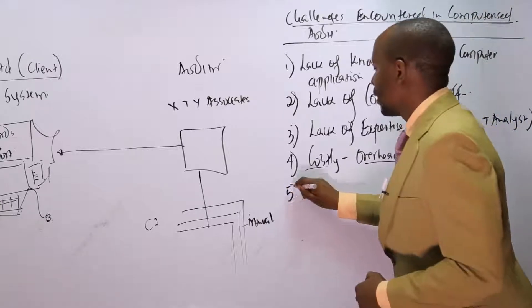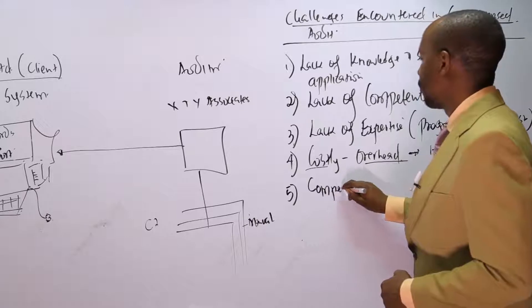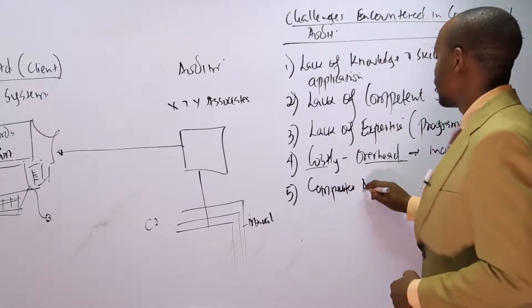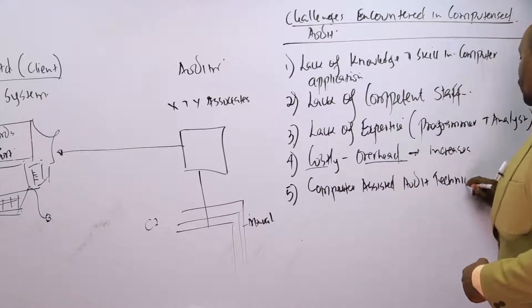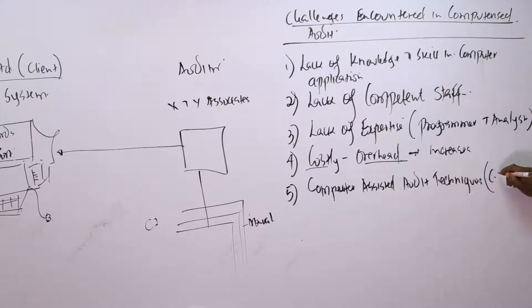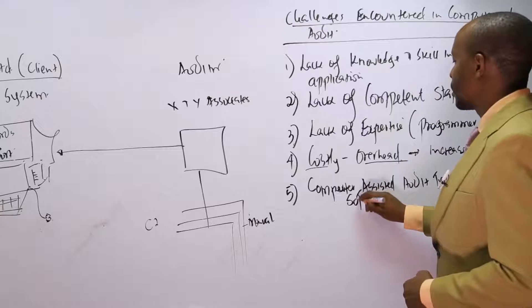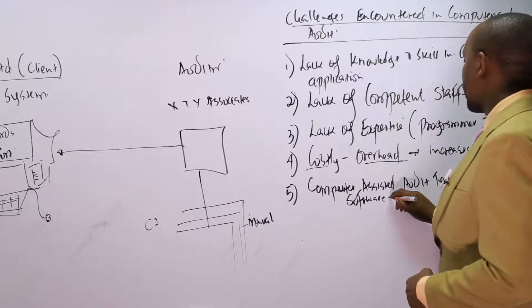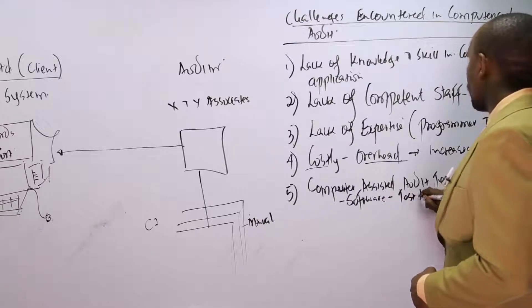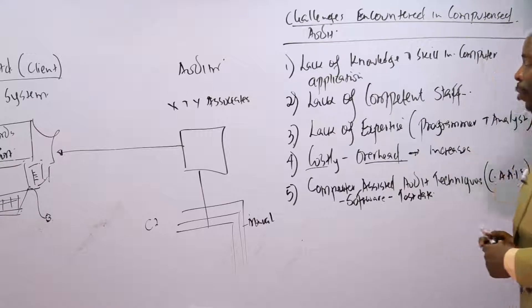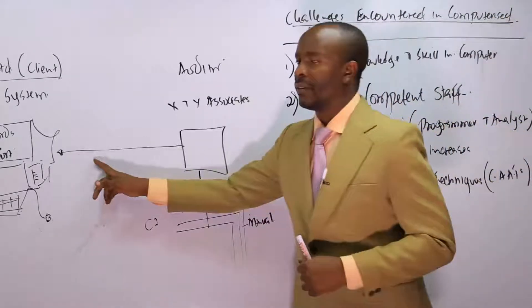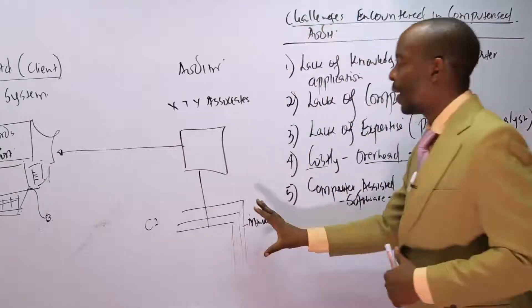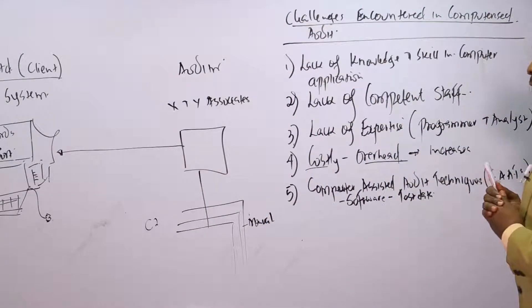Number five: sometimes we use Computer Assisted Audit Techniques, known as CAATs. CAATs consist of software and test data. Both require you to design them, or hire someone to design them. If you're auditing a manual system, you don't need CAATs. But if you're auditing a computerized system, you need CAATs, and that becomes one of the challenges not experienced in manual audits.